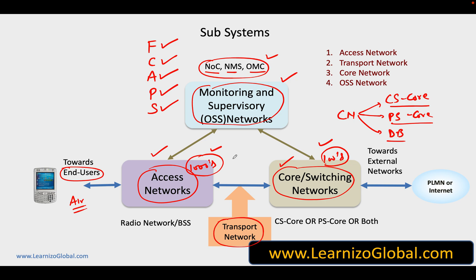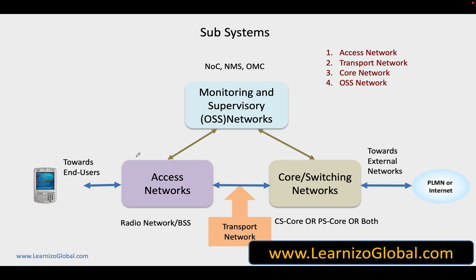We have a lot of devices in the access and core networks and we need to connect all these devices using some physical medium. Those physical media can be electrical cable, optical cable, microwave, or satellite. All these networks are referred to as transport networks, and transport networks have the responsibility of connecting all the equipment in the access network, in the core network, and from the access network to the core network.